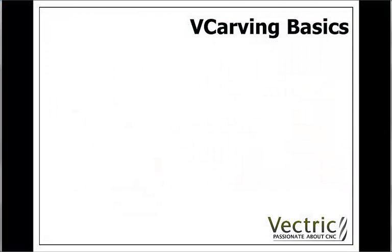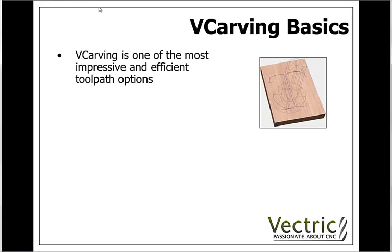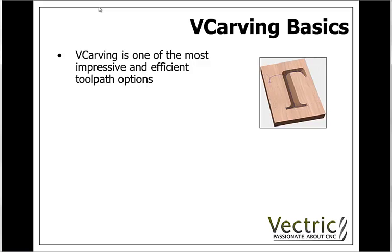Before we go into the example itself, I'd just like to take a couple of minutes to talk about some important concepts and things to be aware of when VCarving. VCarving itself is one of the easiest ways to create really attractive decorative elements with a CNC machine. Whether you're cutting a graphic or cutting text, by using VCarving it's very fast to both calculate within the software, and it's also generally quite quick to machine, ultimately creating something which is effectively a 3D look on a part once you've finished carving it.